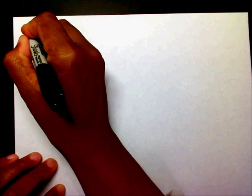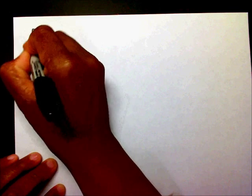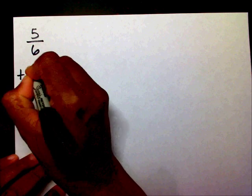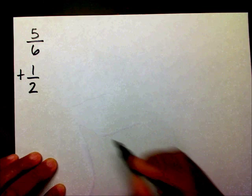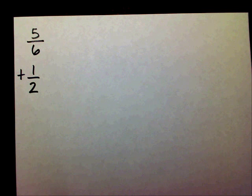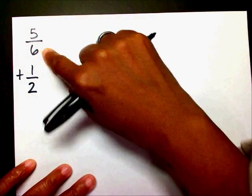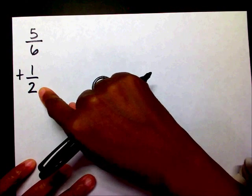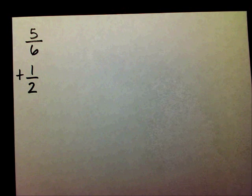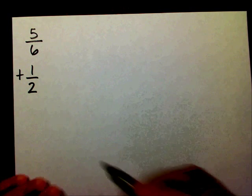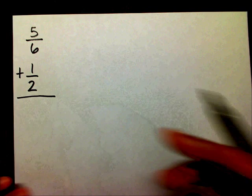Alright, so let's start out with this problem: 5/6 plus 1/2. Whenever you add and subtract fractions, your fractions have to have the same denominator. And as you can tell right now, you have a denominator of 6 and a denominator of 2, so they're not the same. So I need to create a new denominator.